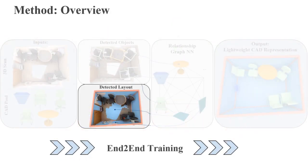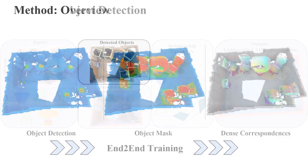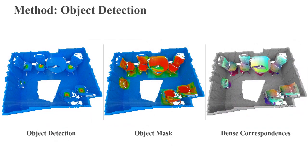Simultaneous to the layout estimation, we detect objects in the scene. We propose a single-shot anchor-based object detector to identify objects. For each detected object, we estimate an object mask and dense correspondences to the canonical normalized CAD space, from which the final object pose is estimated.